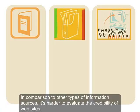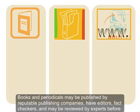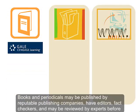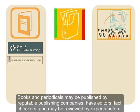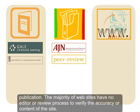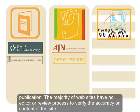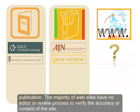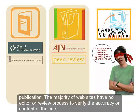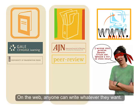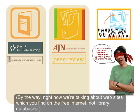In comparison to other types of information sources, it's harder to evaluate the credibility of websites. Books and periodicals may be published by reputable publishing companies, have editors, fact-checkers, and may be reviewed by experts before publication. The majority of websites have no editor or review process to verify the accuracy or content of the site — on the web, anyone can write whatever they want. By the way, right now we're talking about websites which you find on the free Internet, not library databases.